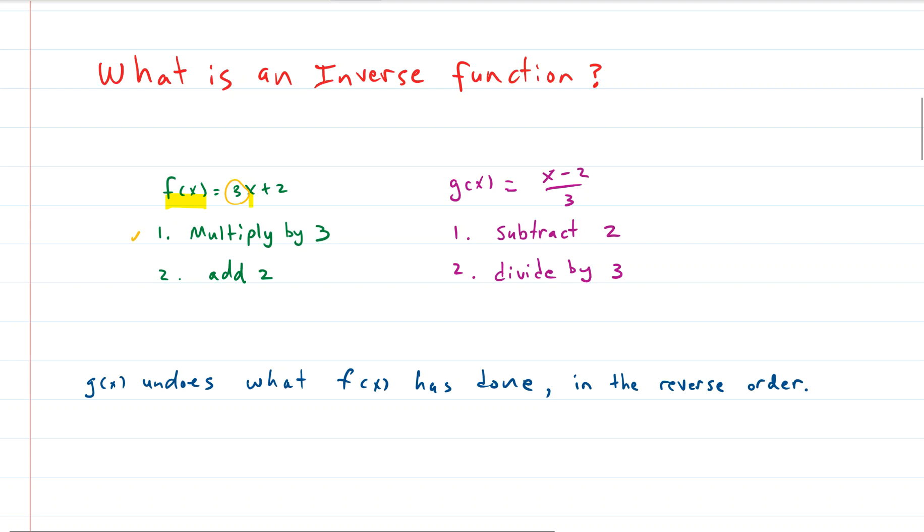After that, the second thing that happens is whatever the result is, you add two. After you multiply it by three, you add two. So there are two things that happen to this input. The first thing is it's multiplied by three. The second thing is you add two to it.